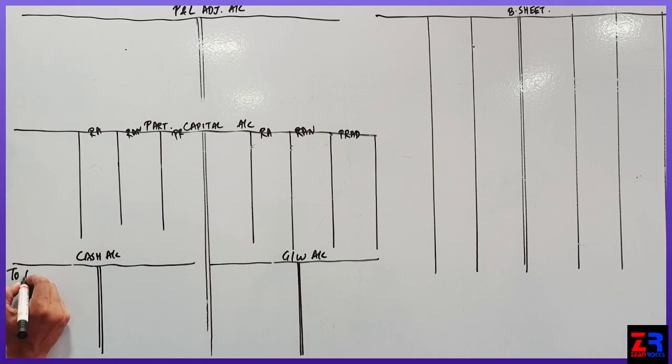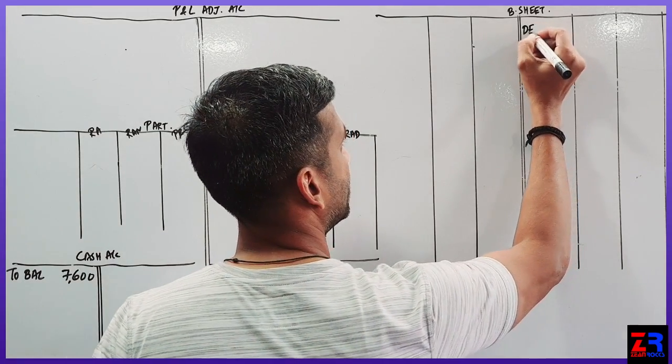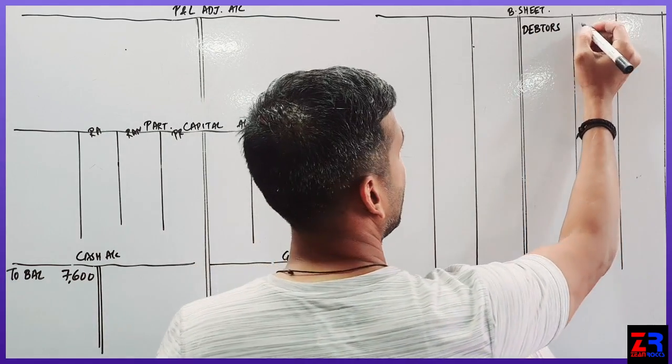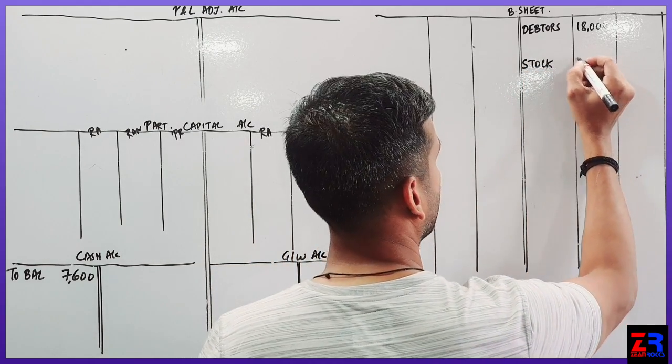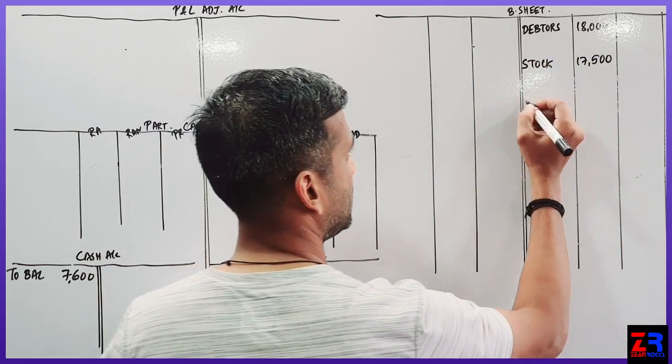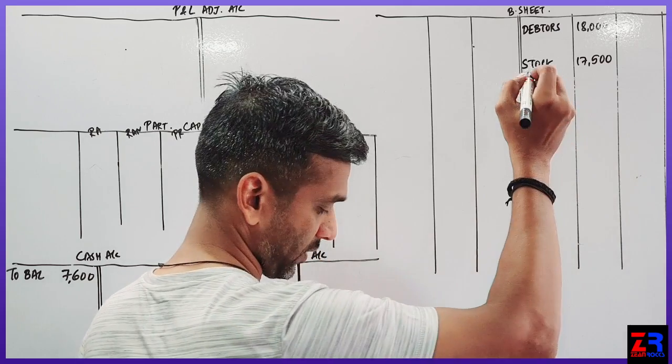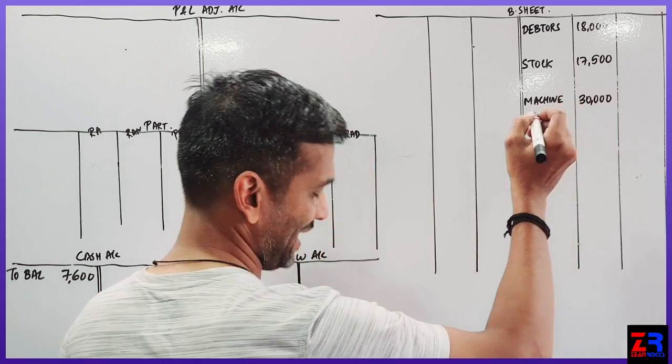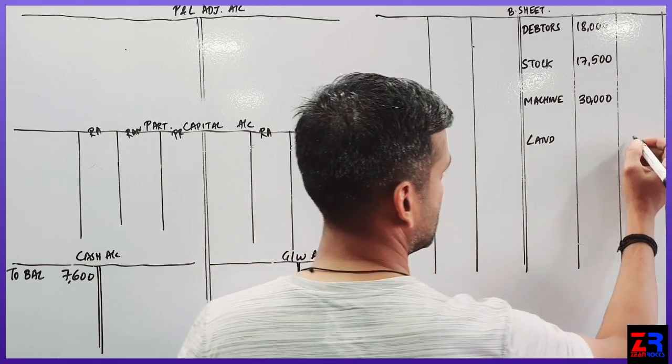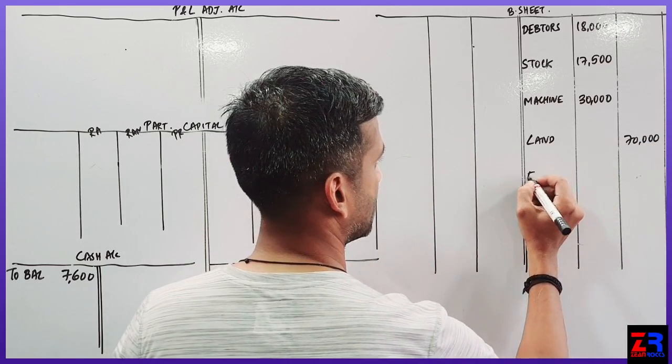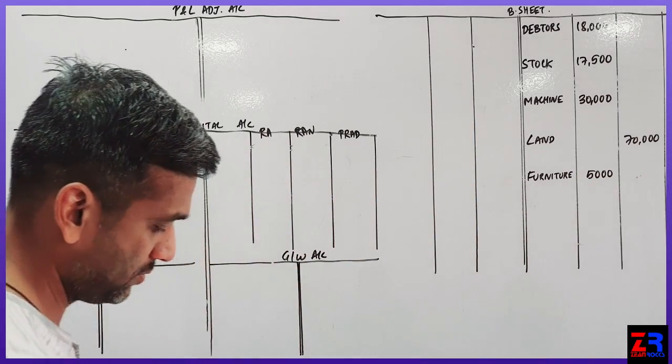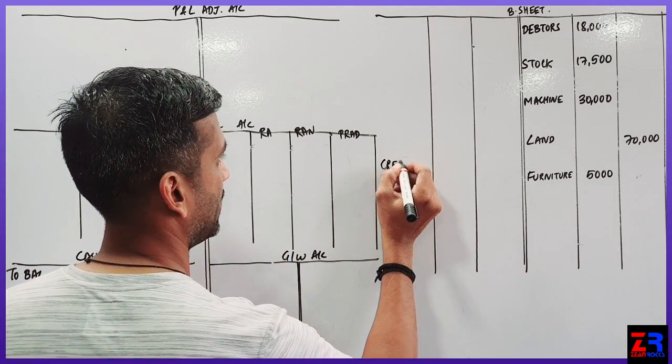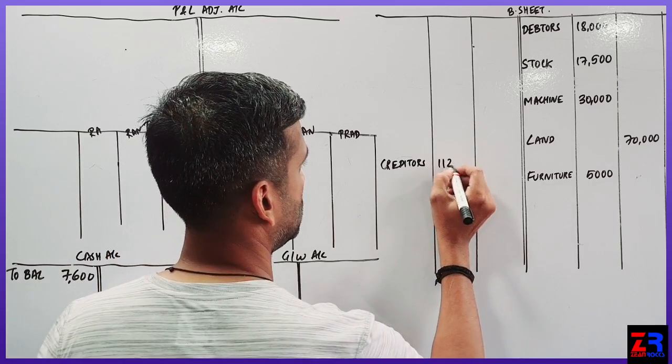Cash 7600 to balance brought down 7600, debtors is an asset 18000, next is stock is an asset that is 17500. Next, machinery is an asset that is 90000, land is an asset that is 70000, furniture is an asset that is 5000. Next, liability, creditors is a liability that is 11200.